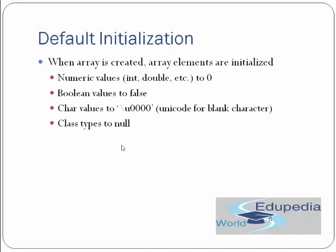Default initialization: when an array is created, its elements are initialized automatically. Numeric values such as int and double are assigned 0. Boolean values are assigned false. Char values are assigned the Unicode blank character. Class-type references are assigned null.